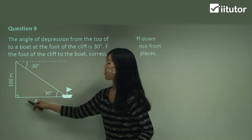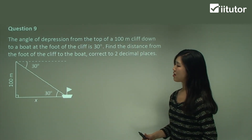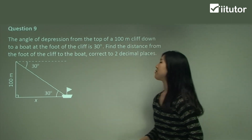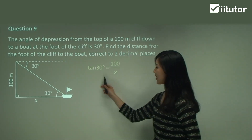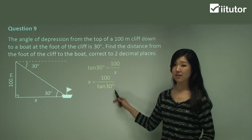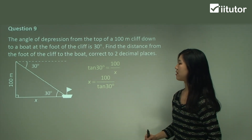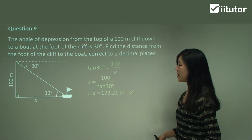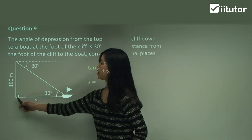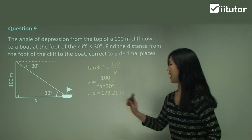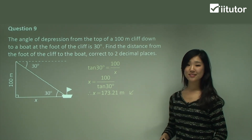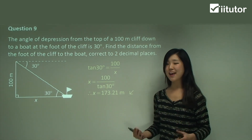Remember, this horizontal line and the ground are both perfectly horizontal, so they're parallel. Therefore these are alternate angles, meaning the angle inside the triangle is also 30 degrees. Using tan: tan 30 = opposite 100 over adjacent x. So x = 100 over tan 30. Put that into your calculator and you get x = 173.21 meters. That's the distance from the boat to the foot of the cliff. I hope you remember those angles of elevation and depression.